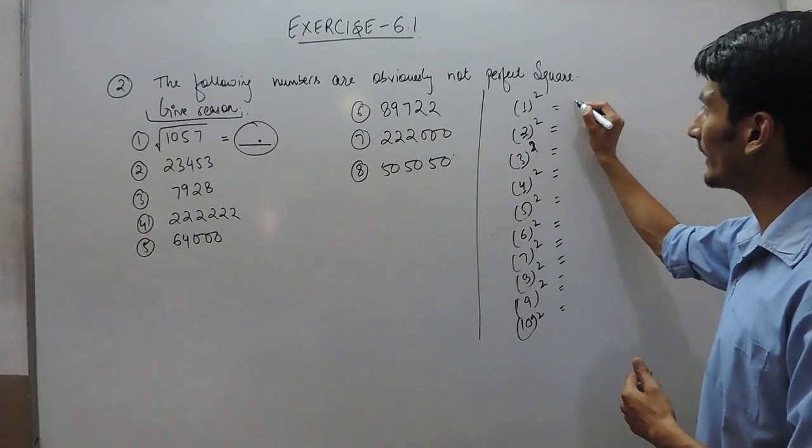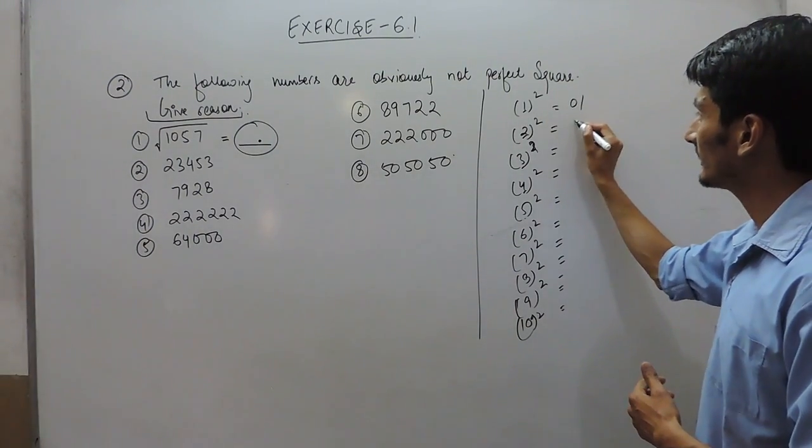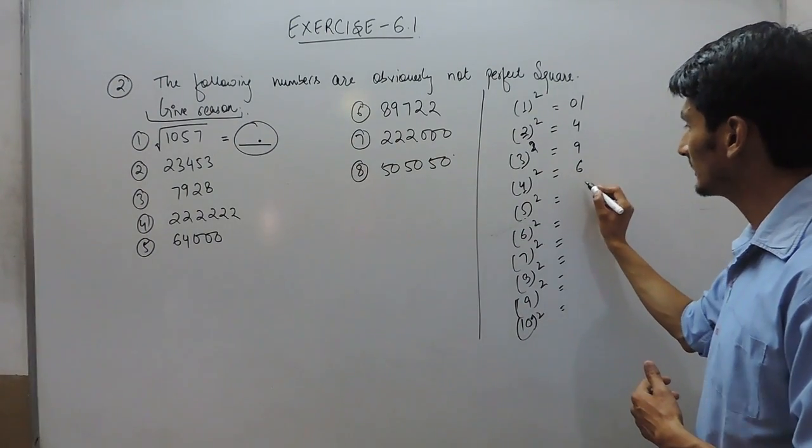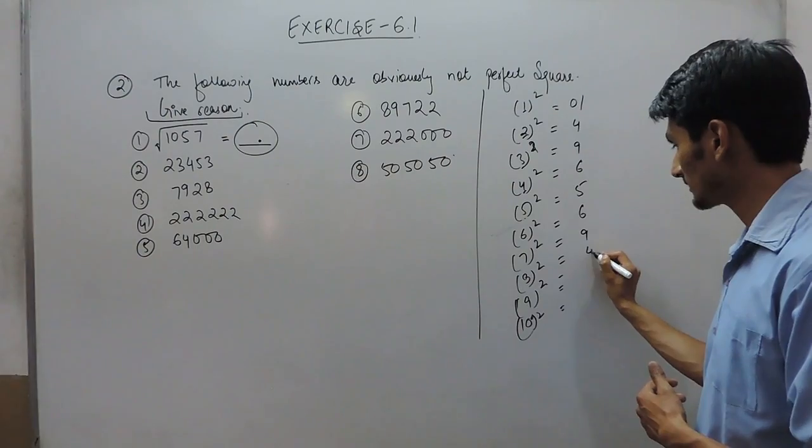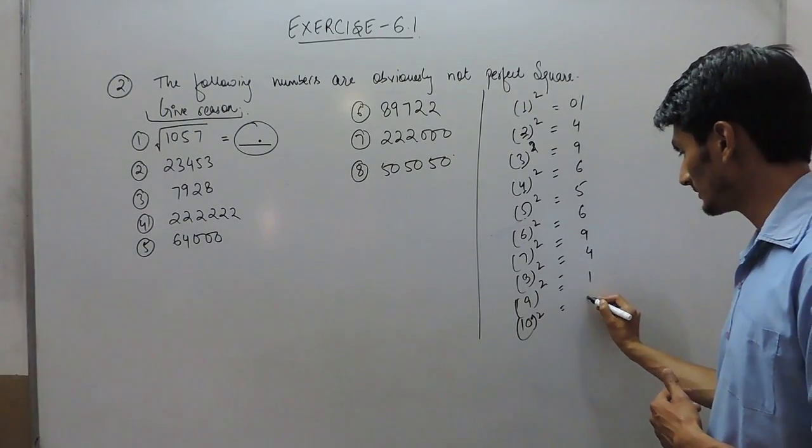So when 1 is squared it gives 1, 2 squared gives 4, 3 squared gives 9, then 6, 5, 6, 9, 4, 1, 0. The unit digits are 0, 1, 4, 5, 6, 9.